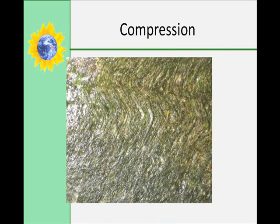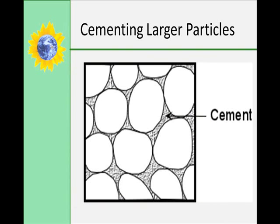Unlike loose sediments, sedimentary rocks have been compressed by the pressure of overlying sediments and rocks and are often held together by a hard matrix of crystalline cement. With finer grain sediments such as clay and silt, compaction alone will hold the sedimentary particles together. Coarser or larger sediment particles are also compacted, but to form sedimentary rock they must be cemented together by minerals dissolved in water.